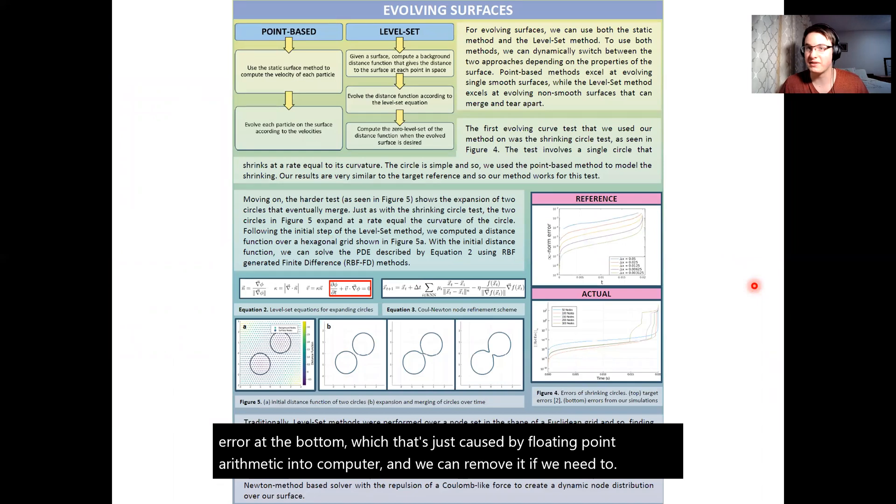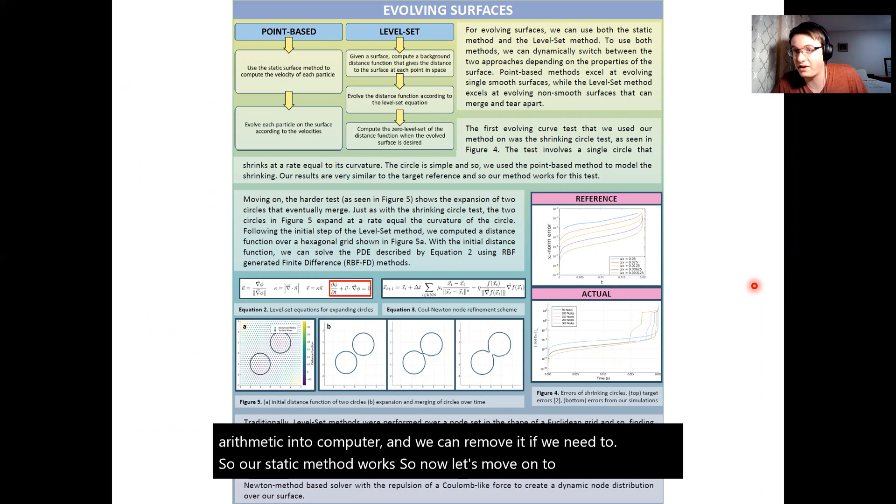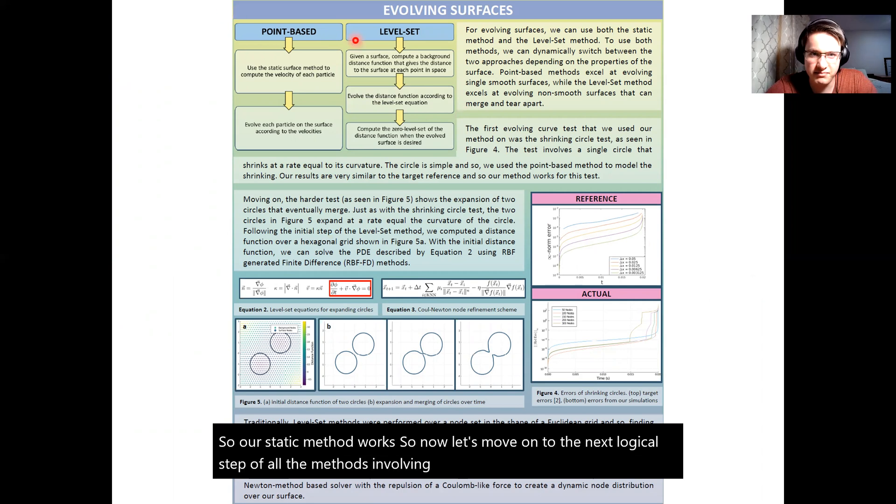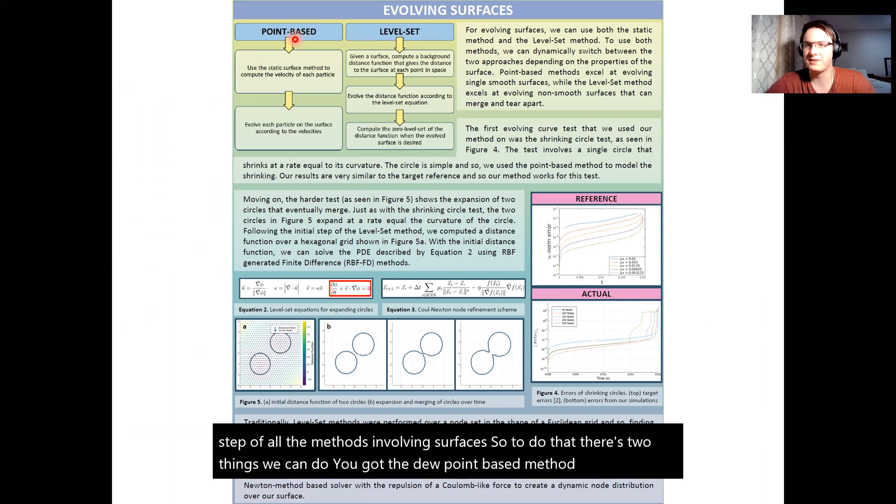So our static method works. So now let's move on to the next logical step, evolving methods and evolving surfaces. To do that there's two things we can do. You got point-based method or level set methods. Point-based methods you just look at each point on a surface and pretty much kick it through space according to some equation. So not too hard, pretty straightforward.